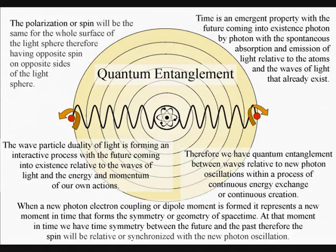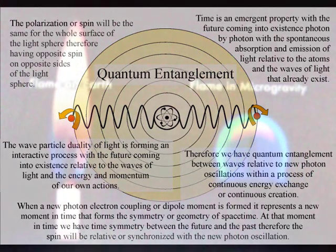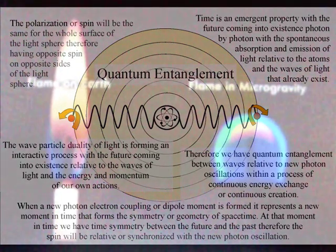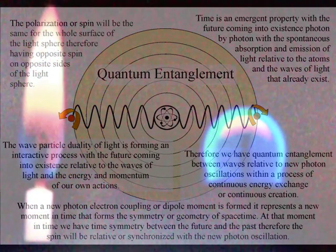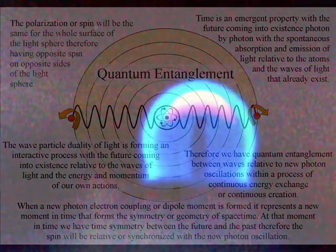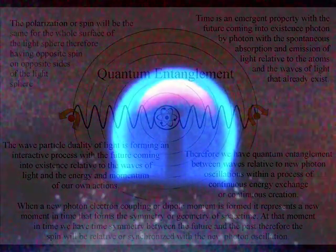When we look at visible light in the form of a candle flame, this symmetry is distorted by turbulence in the atmosphere and by gravity. But on the International Space Station, in almost zero gravity, this spherical symmetry can be seen, with the light forming a sphere that is interacting with the atmosphere on the two-dimensional surface of the sphere. We are seeing the future coming into existence, photon by photon, within that reference frame.